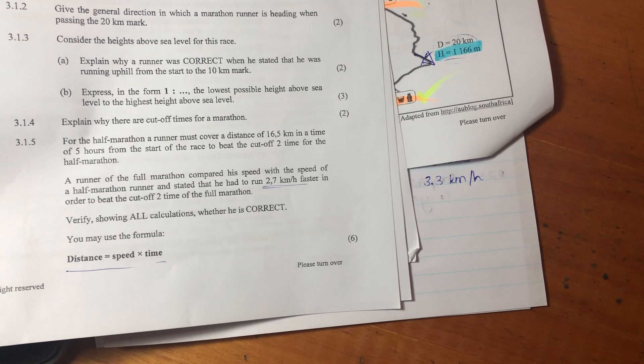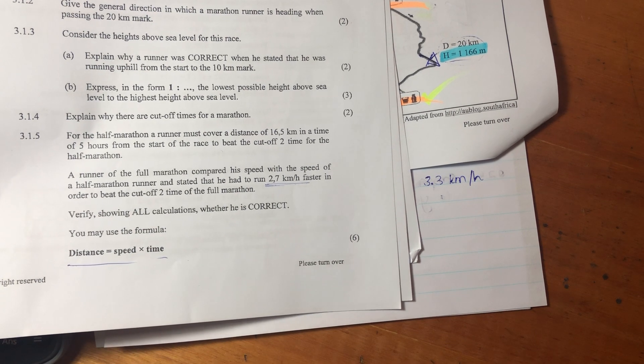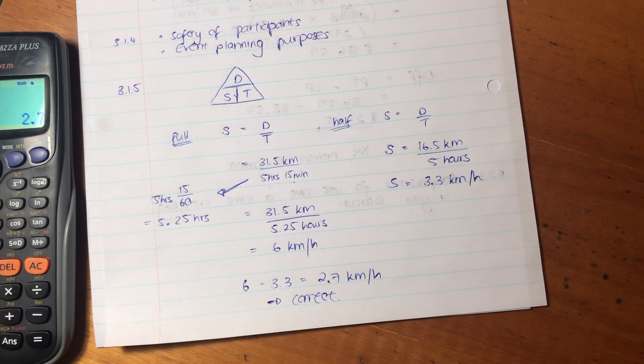So we're comparing two cutoff times. We're comparing two speeds for two different runners running. One's running full and one's running half, and we compare those two speeds. We say the difference is 2.7. Therefore, the person is right. It is 2.7 kilometers per hour faster. So it's quite a tricky question, but one of those ones that, again, break it down into its constituent parts, and then it's a little bit easier to access. Cool. Let's move on to the second part of question three.